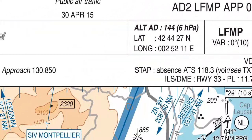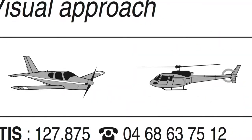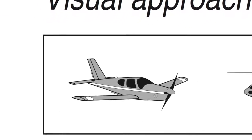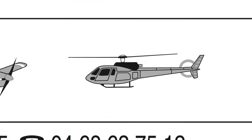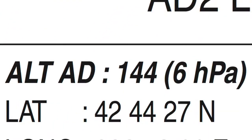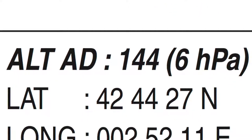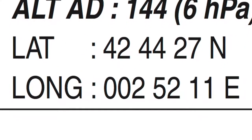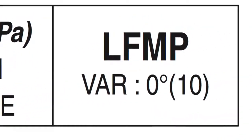The next section talks about a couple of things. The first is the type of aircraft allowed to land at the airfield. In this case, we've got the diagram of an airplane and of a helicopter — so airplanes and helicopters are allowed to land here. Next to that, you've got position information: the airport altitude, 144 feet or 6 hectopascals, which is the difference in pressure between sea level and the airport elevation. Right below that, you've got the coordinates of the airfield itself, and next to that, the local variation.